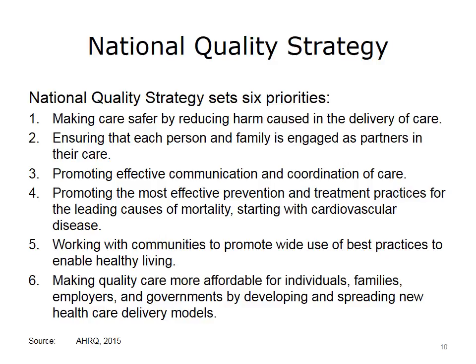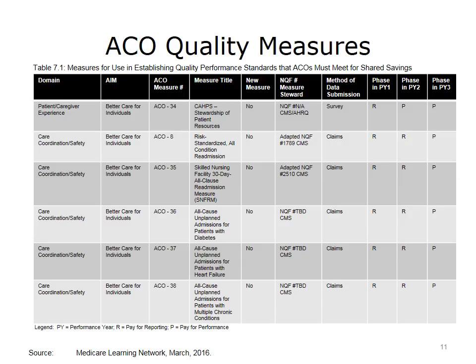Here's an example of alignment with the National Quality Strategy. For 2016, the quality metrics for Medicare ACOs include 34 measures. These measures fall into four of the six NQS domains: one, patient and/or caregiver experience; two, care coordination and/or safety; three, preventive health; and four, care for at-risk populations.